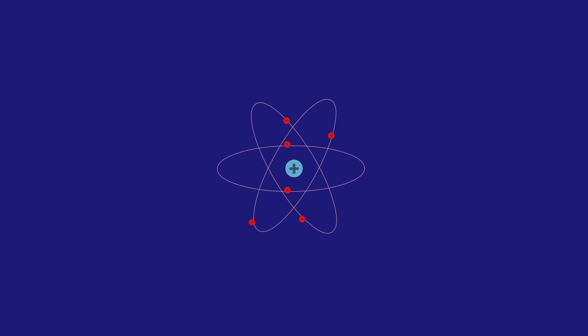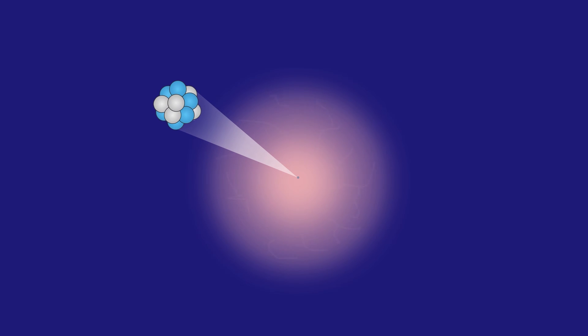Our current model of the atom is the result of many discoveries by scientists over the years. Starting with the simplest idea that an atom is spherical, scientists then carried out experiments that refined the way we think about atoms and the smaller particles that constitute an atom until they arrived at our current model.